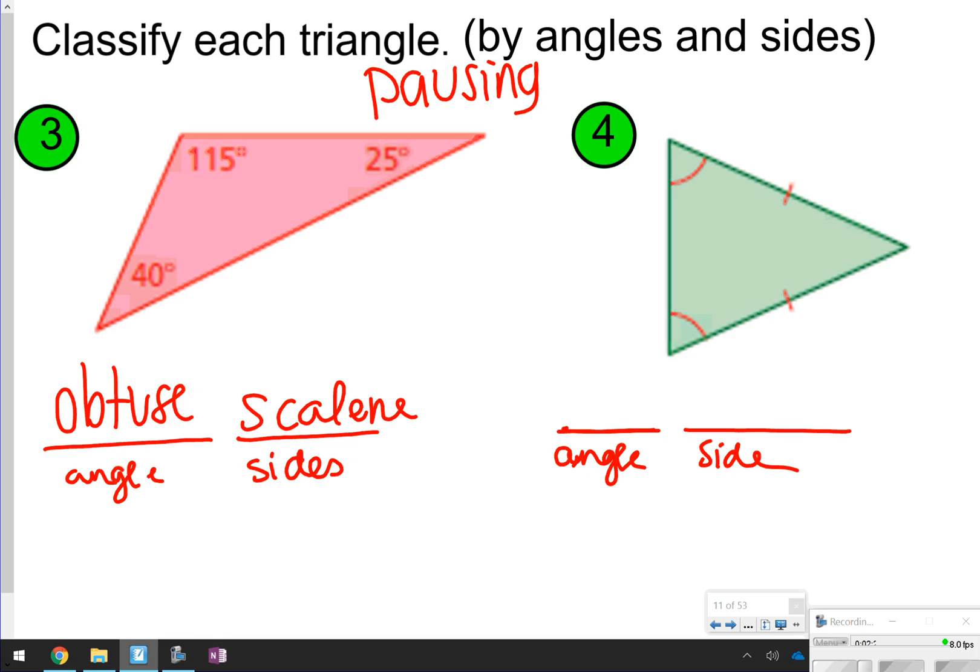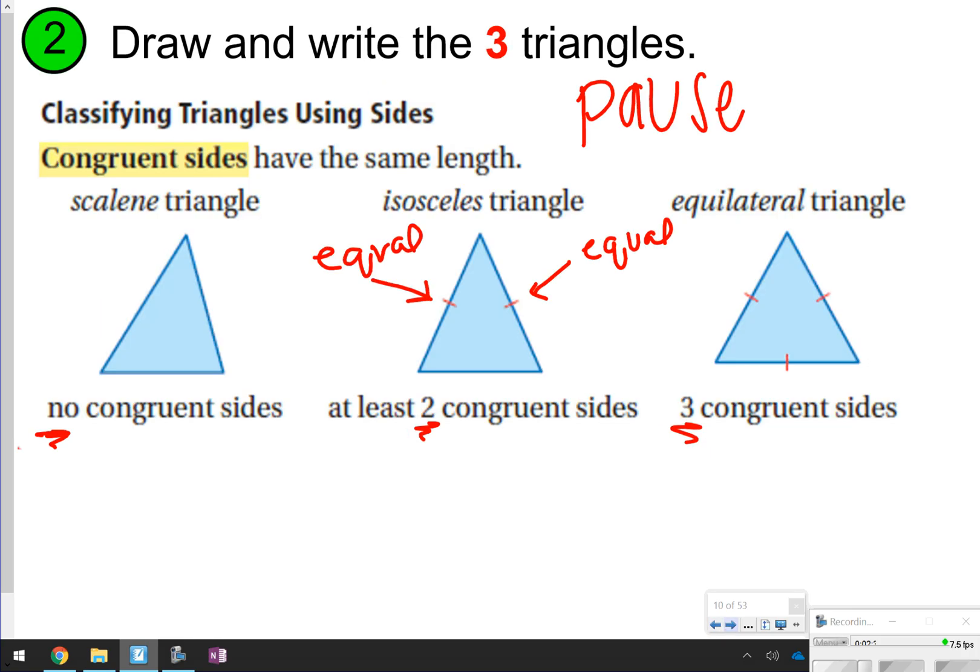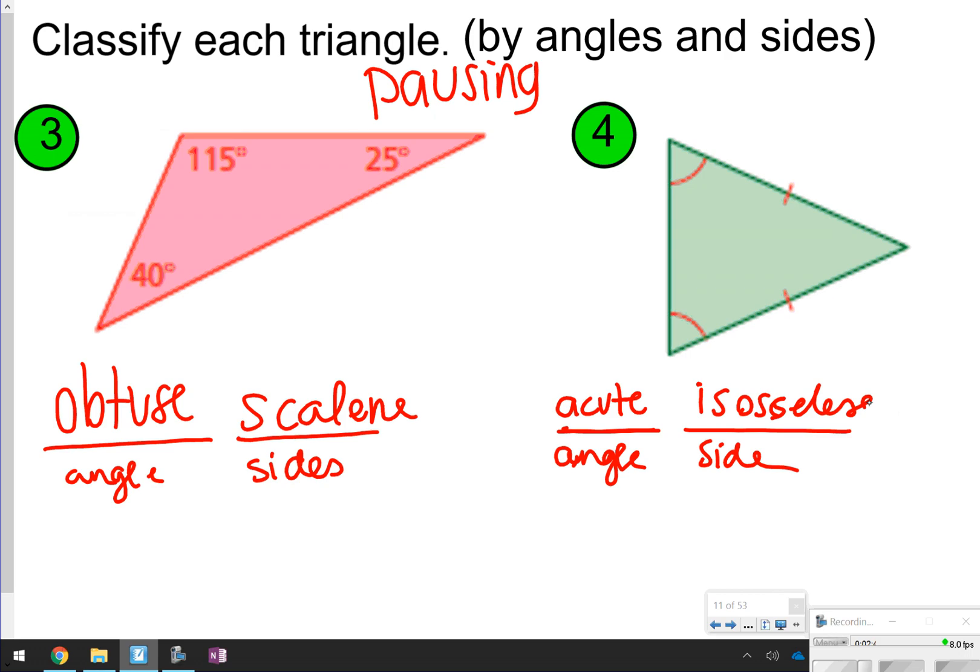Number four, all the angles are acute, and there are two sides that are the same, so that would be an isosceles. I just need to make sure I'm spelling isosceles correct. Isosceles, yep. So isosceles would be your number four.